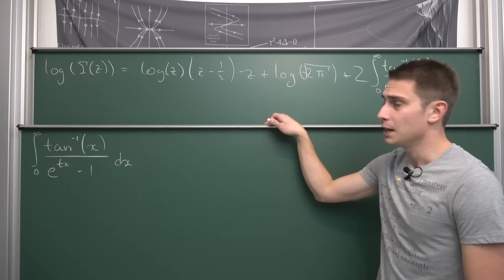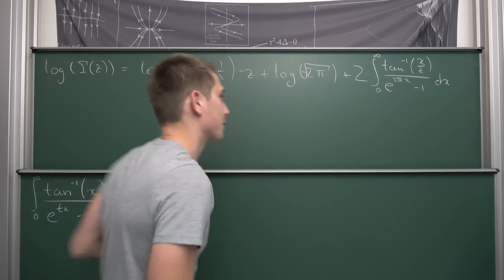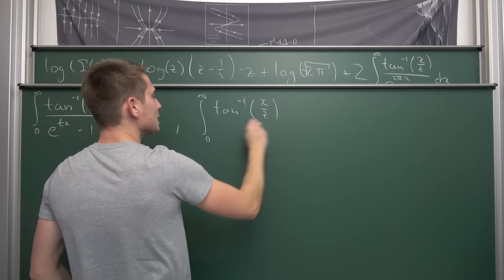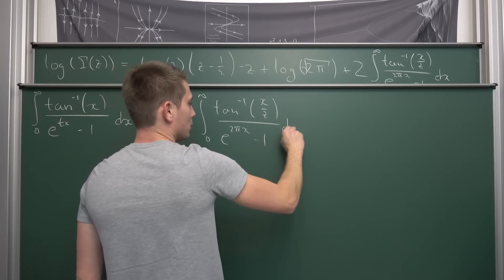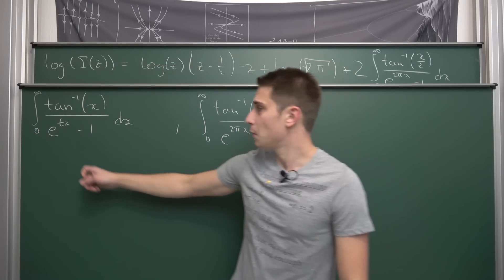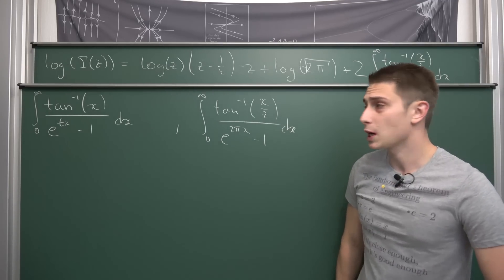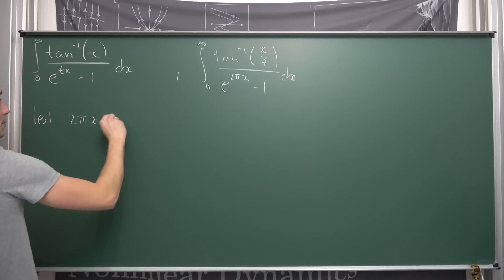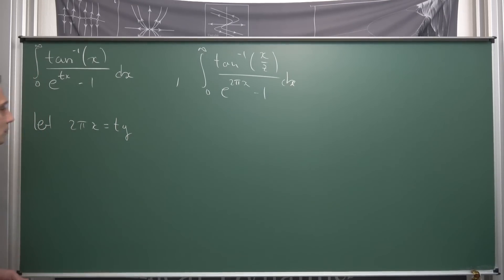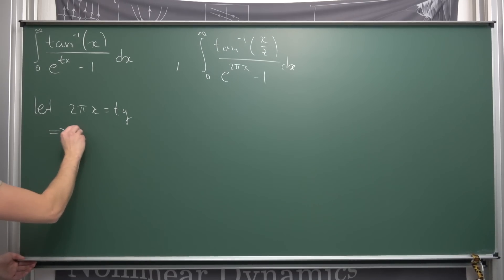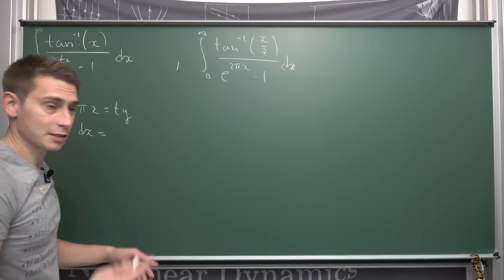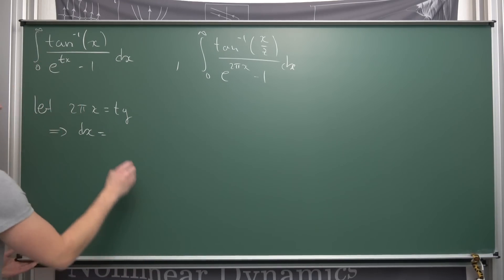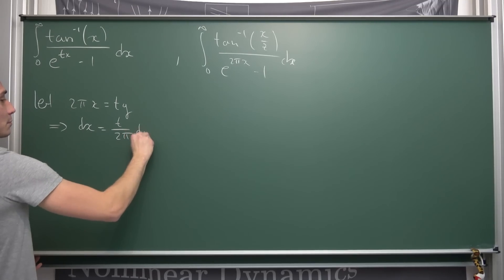We have applied this before, so it's not a big deal. Now I would like to rearrange things in this integral. We are going to look at the integral from zero to infinity of the inverse tangent of (x divided by z) divided by (e to the 2πx minus 1), integrated with respect to x. Our first goal is to get a parameter t into our exponential function. For this we introduce a substitution: let 2πx equal t times a new variable y. Implicit differentiation gives us dx equal to t divided by 2π times dy.